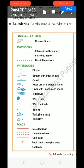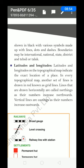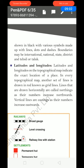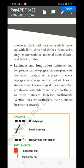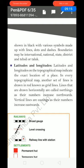Boundaries: administrative boundaries are shown in black with various symbols made up with lines, dots and dashes. Boundaries may be international, national, state, district, tehsil and taluk. Taluk is smaller than tehsil — tehsil and taluk are the same. It is the area smaller than a district. All these are shown with black lines.